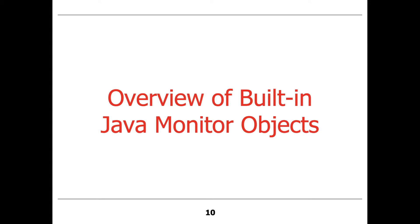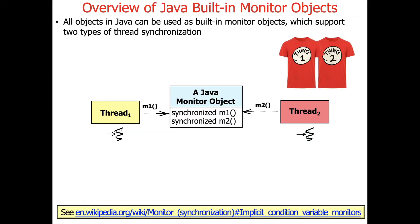Those are the three primary capabilities that a monitor provides in general, irrespective of whether we're talking about Java or some other monitor implementation. Now that you have a high-level overview of what a monitor does as an abstraction — as an abstract data type — let's zero in on built-in Java monitor objects. All objects in Java can be used as built-in monitor objects, and they support two types of thread synchronization. You can read more about this on the Monitor Wikipedia page under implicit condition variable monitors, which is what Java supports out of the box.